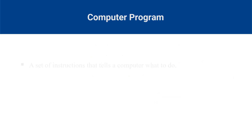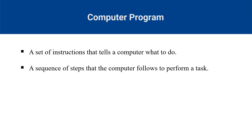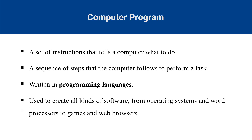What is a computer program? A computer program is a set of instructions that tells a computer what to do. It is a sequence of steps that the computer follows to perform a task. Computer programs are written in programming languages, which are special languages that computers can understand. Computer programs are used to create all kinds of software, from operating systems and word processors to games and web browsers.